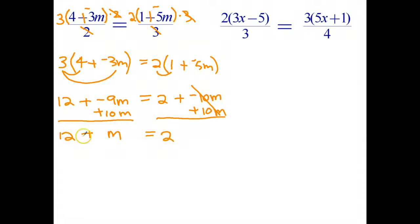So now I get the equation 12 plus m equals 2. Subtract 12 from both sides, because I've got an add there, the opposite of adding is subtracting. Those go to 0, leaving just m, and 2 minus 12 is negative 10. So final answer, m equals negative 10.